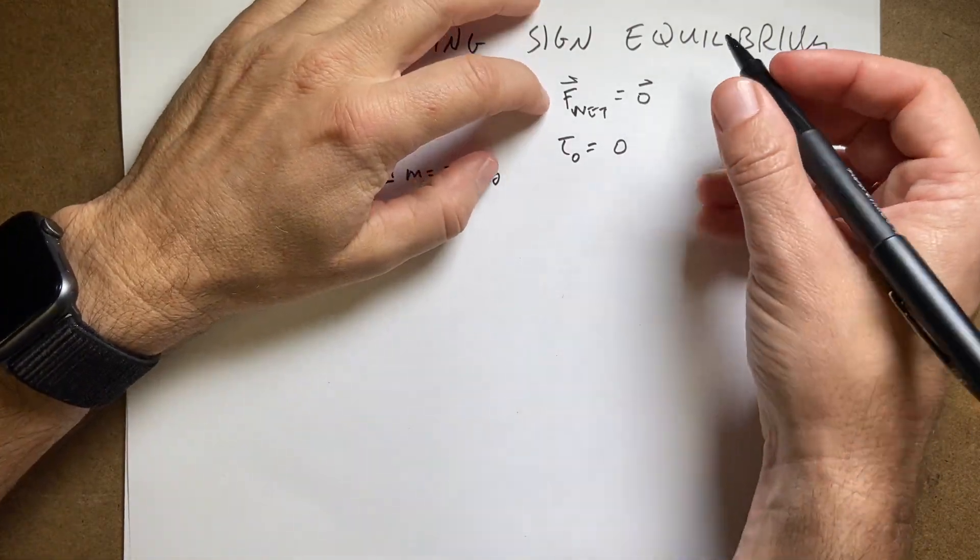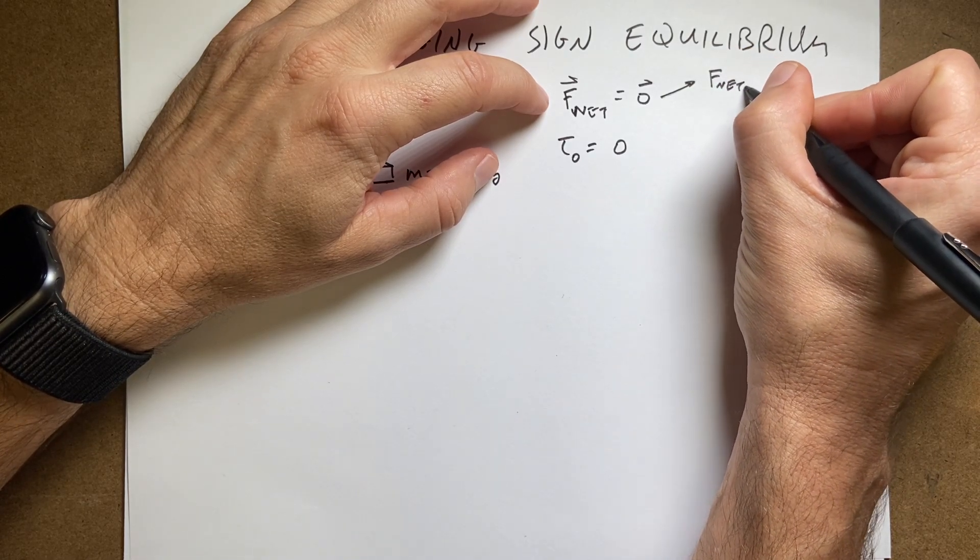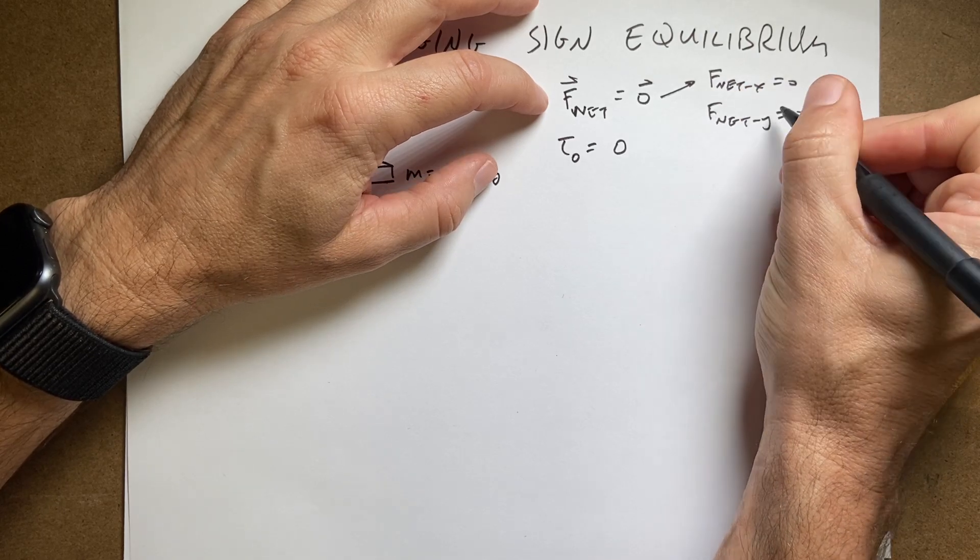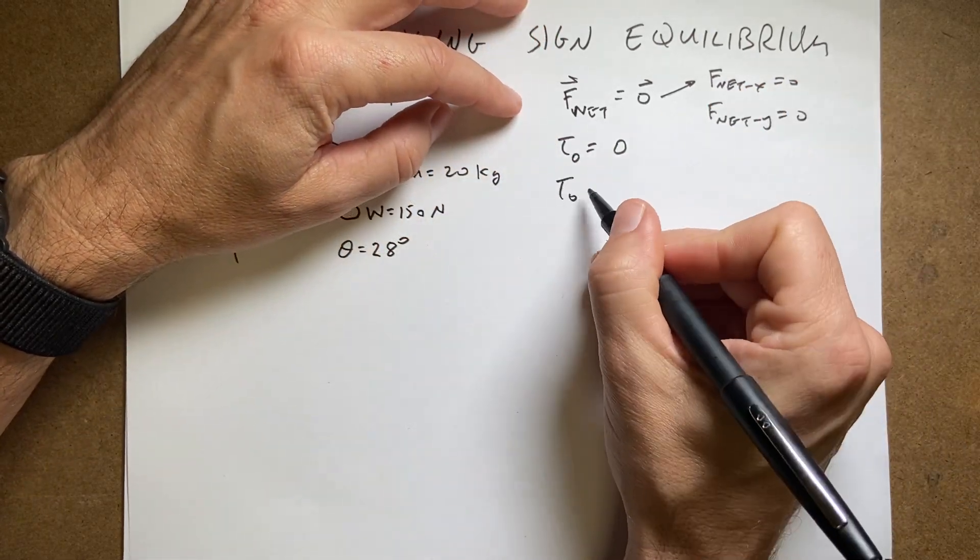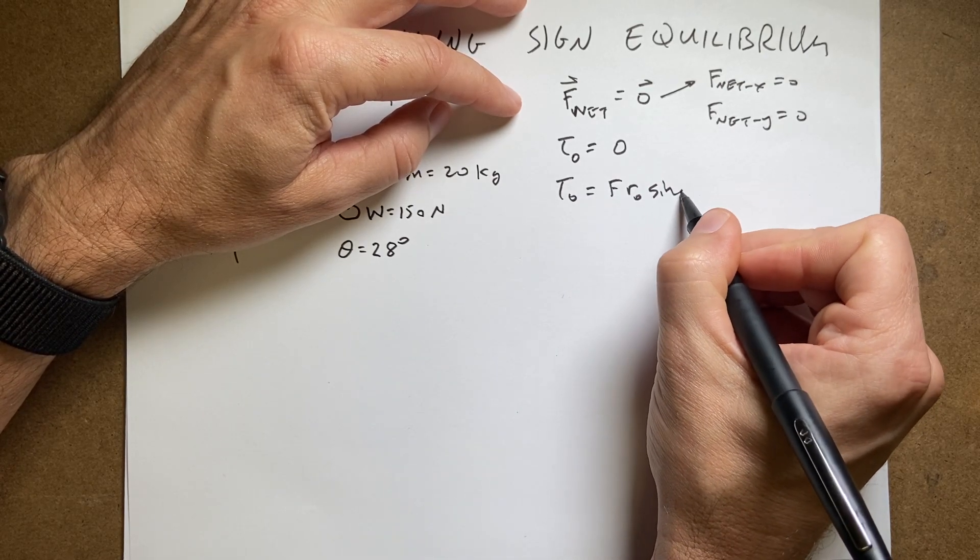And then in fact we can write this as two equations: F net X equals zero, F net Y equals zero. And then the torque about any point is equal to F R zero sine theta.